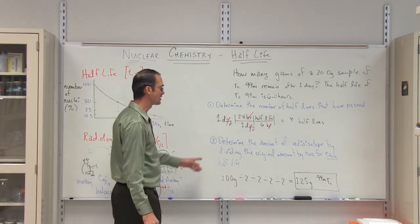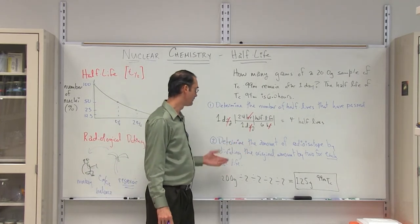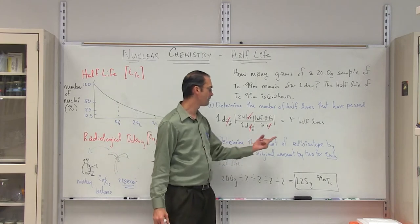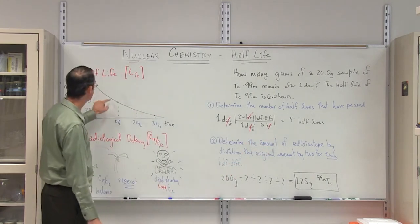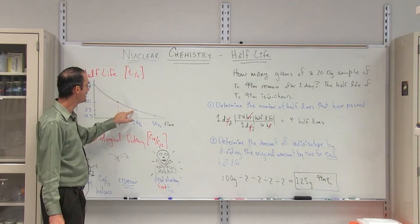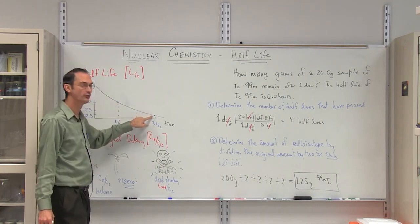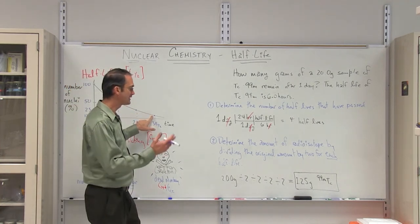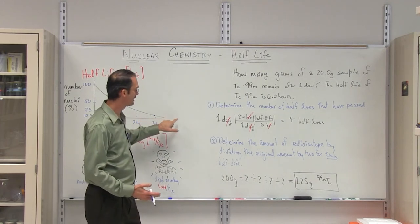The second step is to determine the amount of radioisotope remaining by dividing the original amount by two for each half-life. We divide by two for the first half-life, another two for the second, and another two for the third, and so forth. In this case, we have a fourth half-life, so we divide by two again.